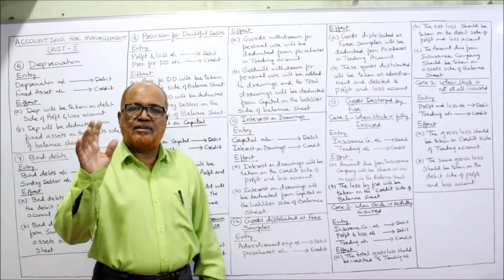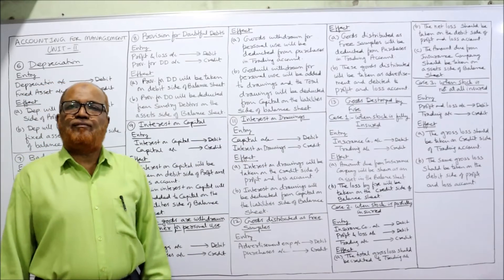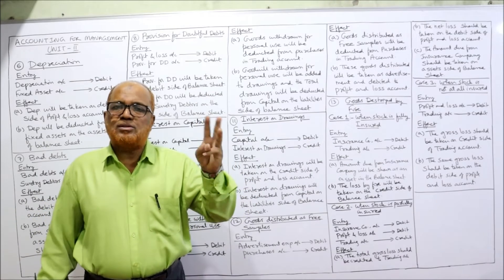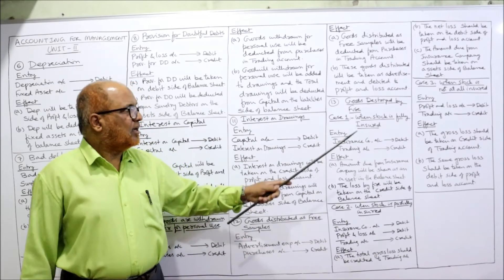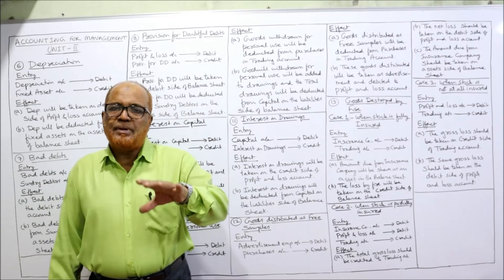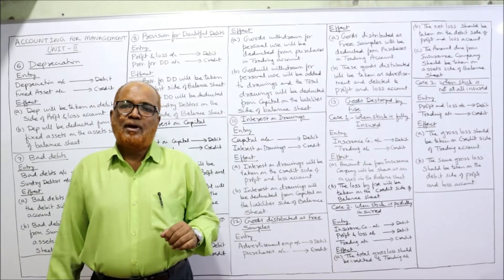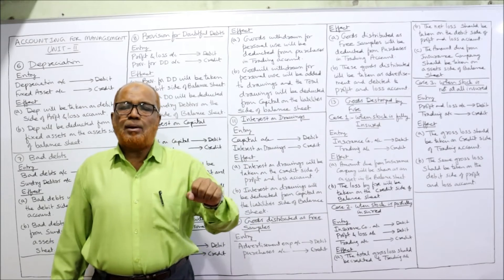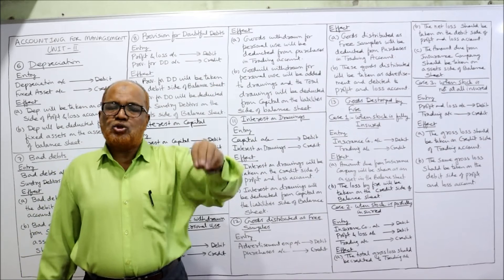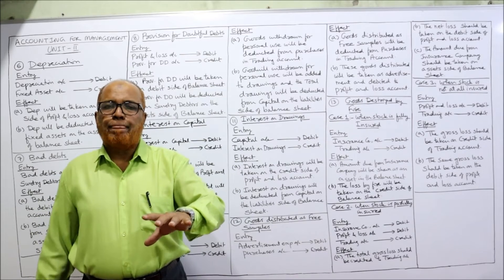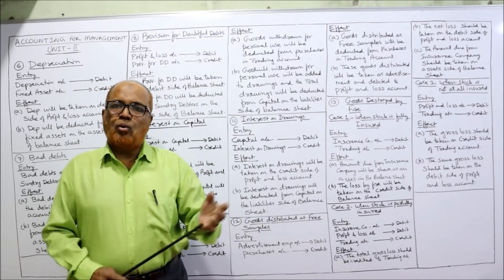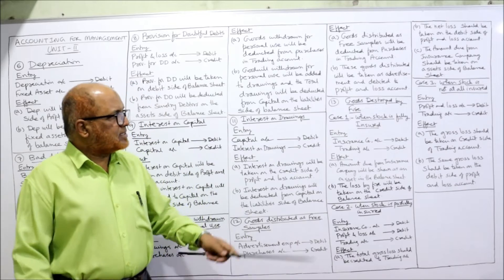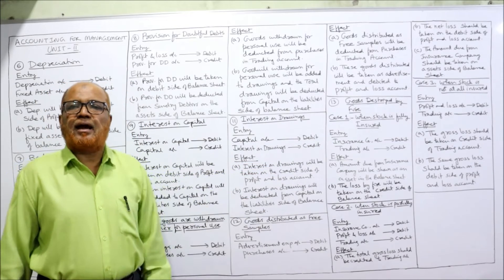The last adjustment is goods destroyed by fire. Sometimes a fire occurs in the godown and goods are destroyed. Three situations may arise. Case one: if the goods are fully insured — the business has taken an insurance policy and the insurance company has agreed to fully compensate the loss. For example, if the loss is 10,000 rupees and the insurance company agreed to pay 10,000, there is no net loss at all.